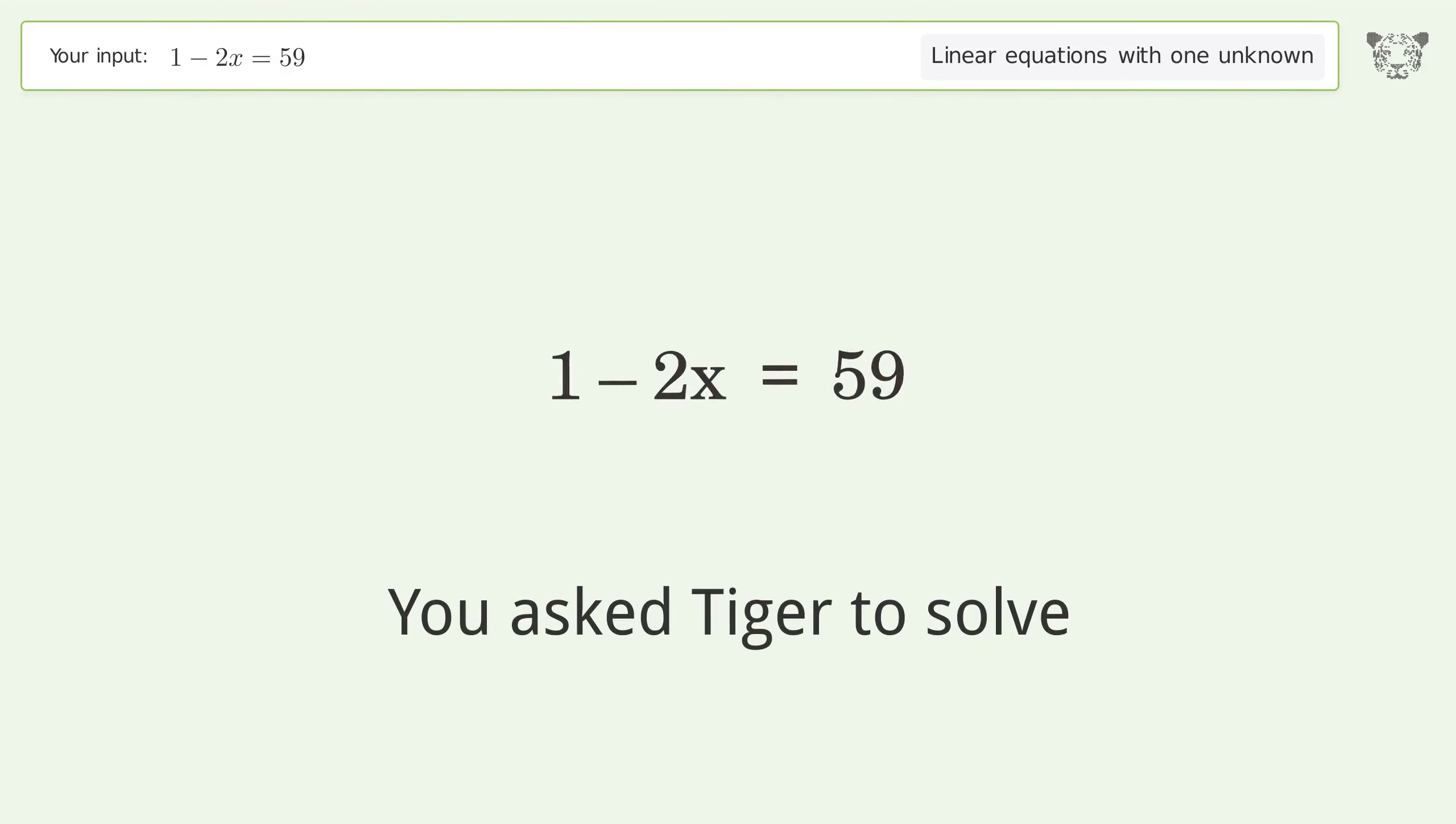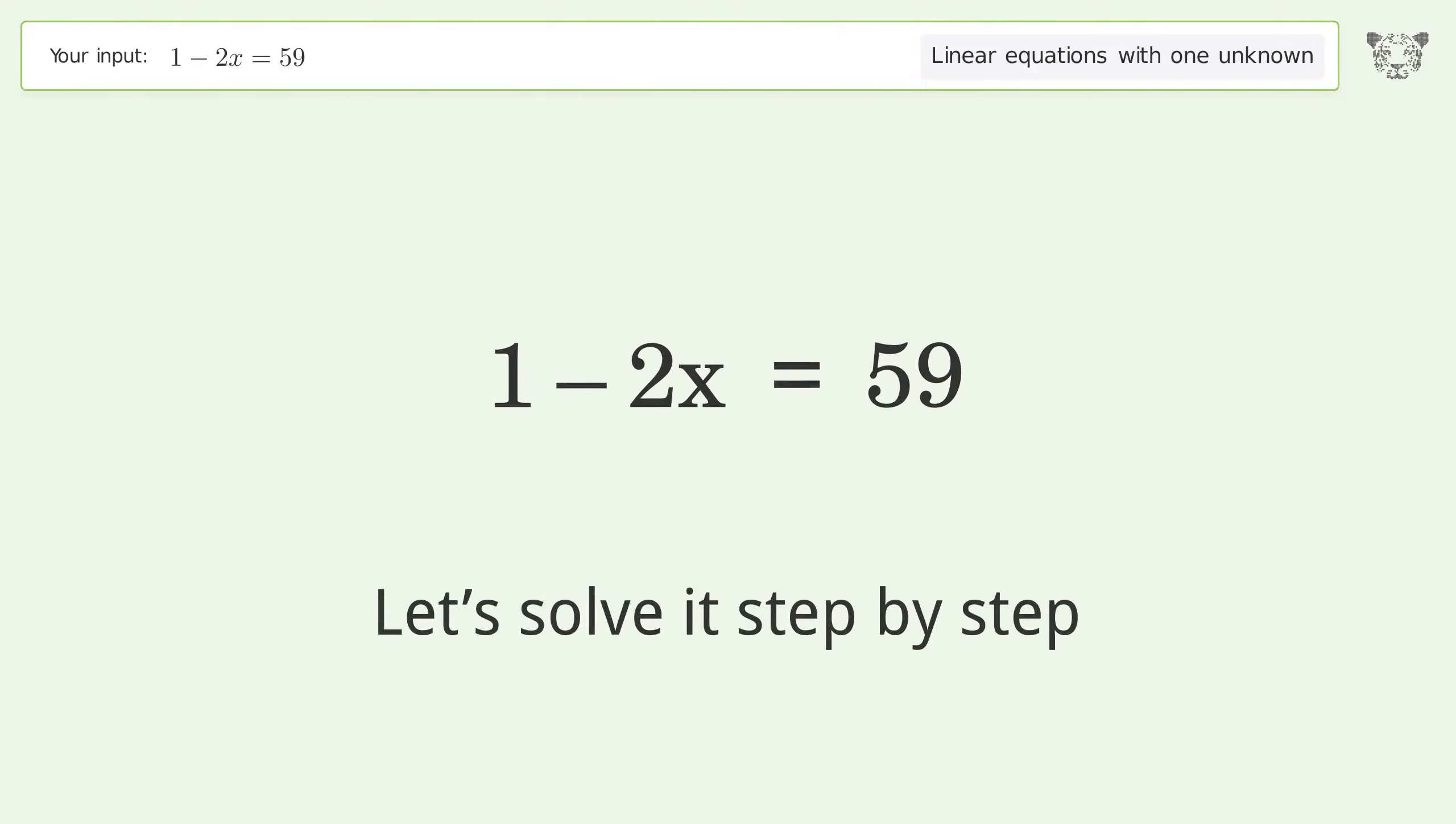You asked Tiger to solve this. This deals with linear equations with one unknown. The final result is x equals negative 29. Let's solve it step by step.